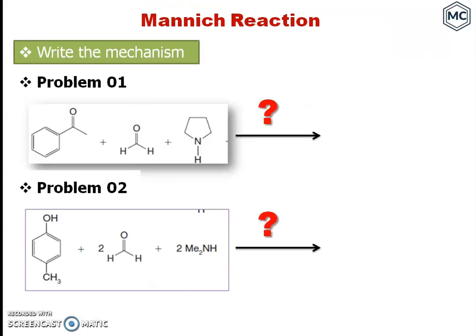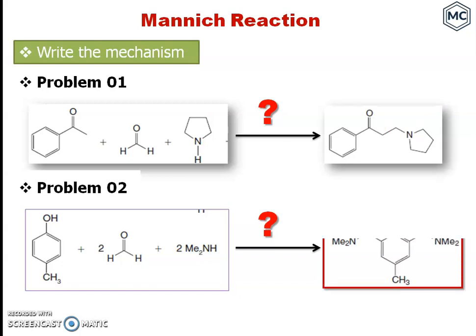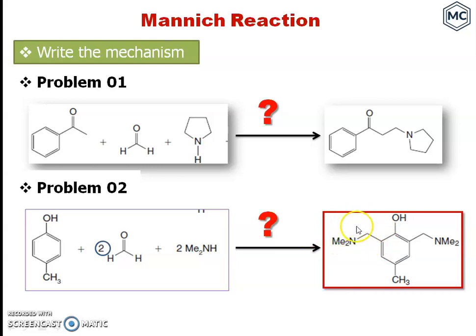I'm giving two problems — you have to do these problems and write the mechanism. Pause this presentation, do them, and finally check whether you are getting the expected product. In the second case, two Mannich reactions take place because you have two equivalents of formaldehyde and there are two ionizable carbons, so two Mannich reactions can occur.